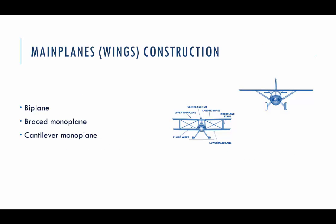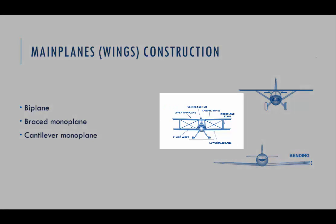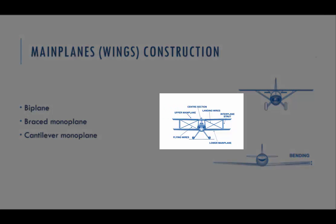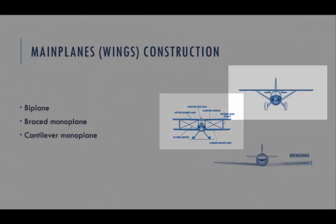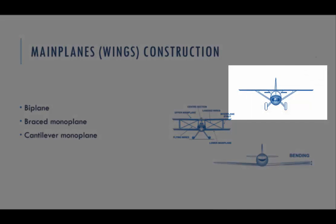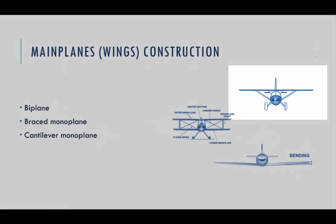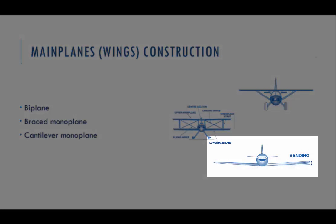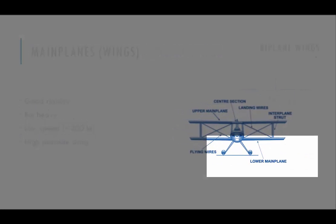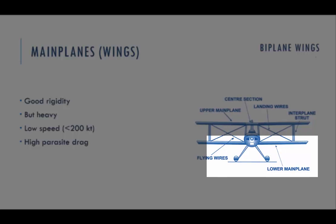Let's move on to wing construction. We have three common types: biplanes, with two levels of wings joined together; braced monoplanes; and cantilever monoplanes without any supporting elements. Let's start with biplanes.